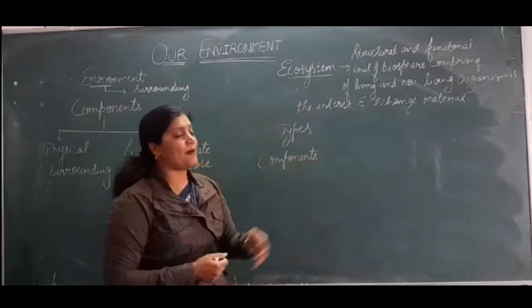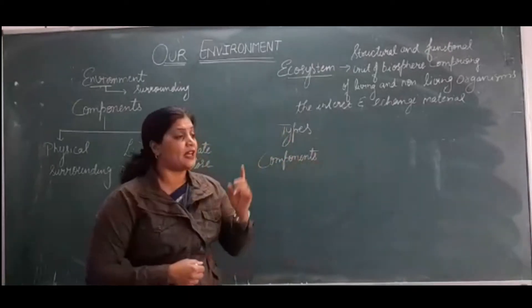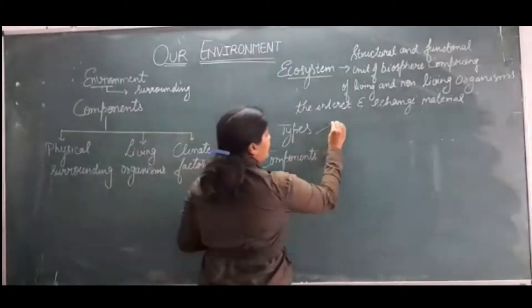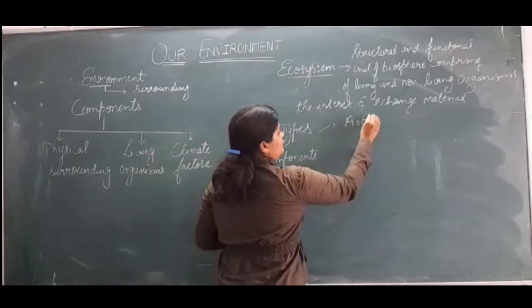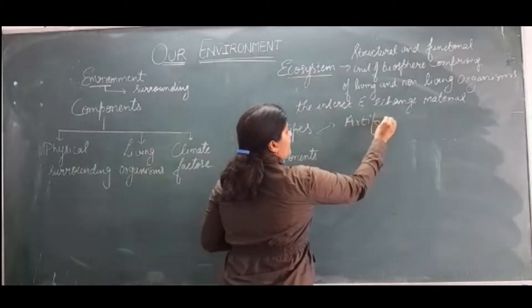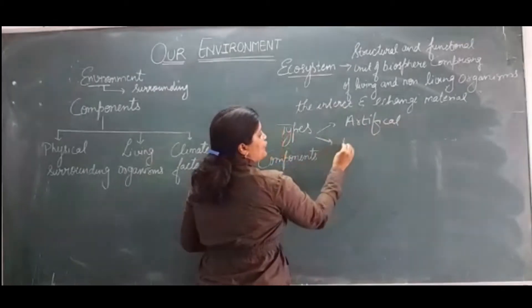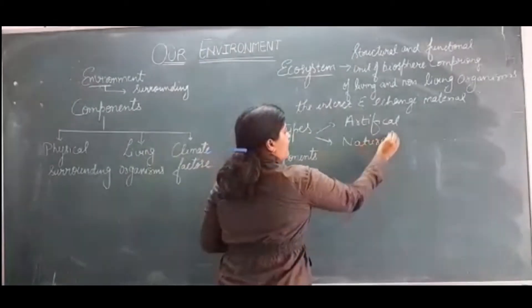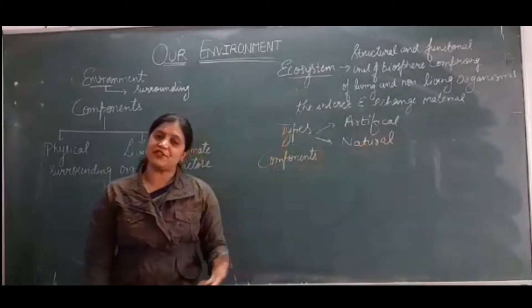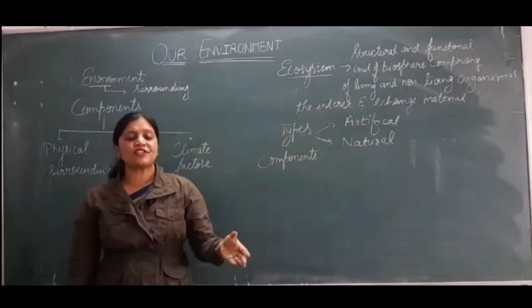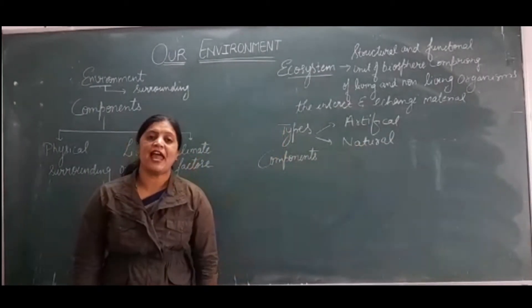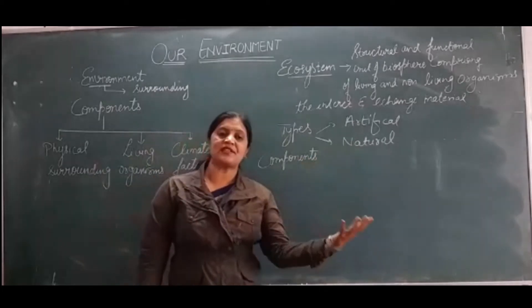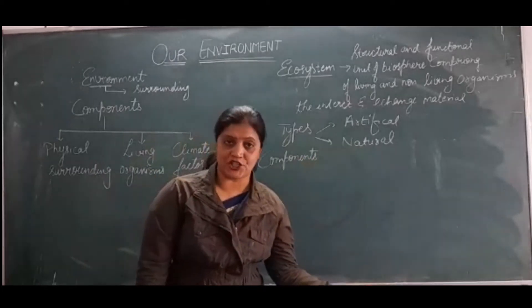If we discuss about the types of ecosystem, there are two types. One is artificial ecosystem, and second is natural ecosystem. Artificial ecosystem means the ecosystem which is created by human efforts. Natural ecosystem is the ecosystem which is present in our nature.